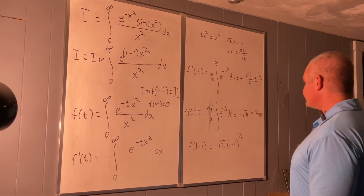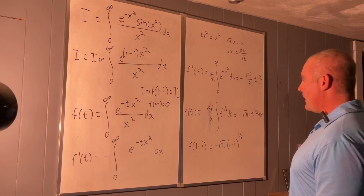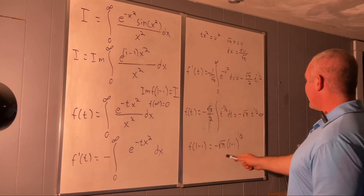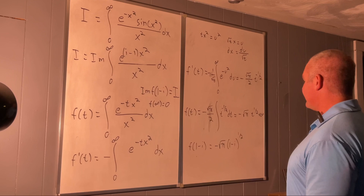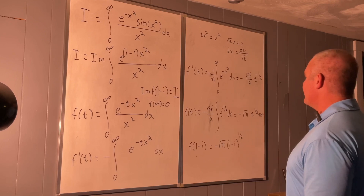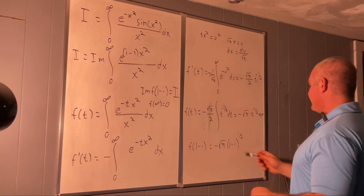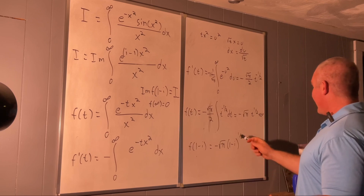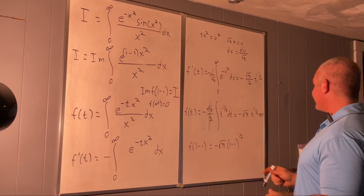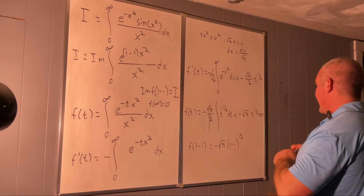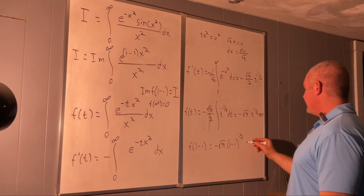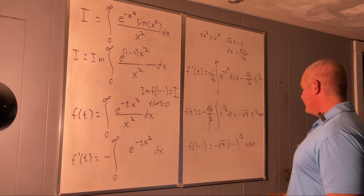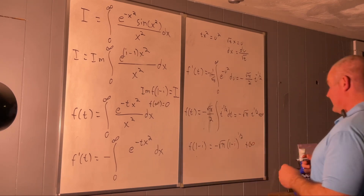So we were evaluating our function of t at the point (1 minus i), giving us negative square root of pi times (1 minus i) to the one half, plus a real infinity.